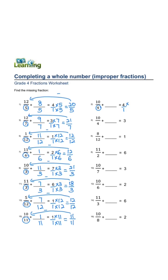denominator is 4. 4 times 4, 1 times 4 equals 16 over 4. 16 minus 10 is 6 over 4.